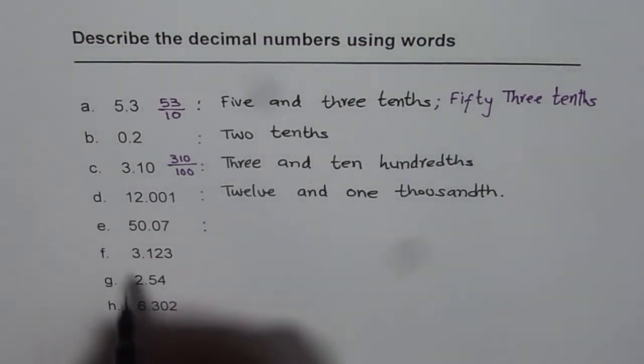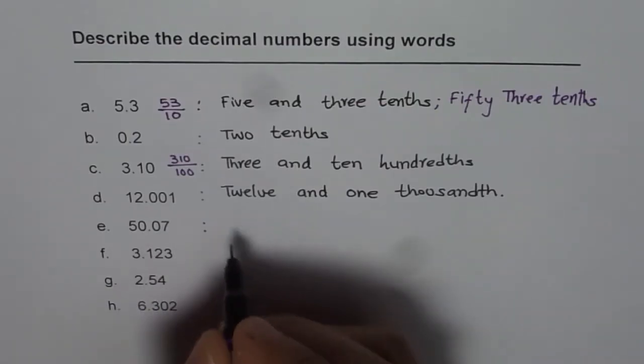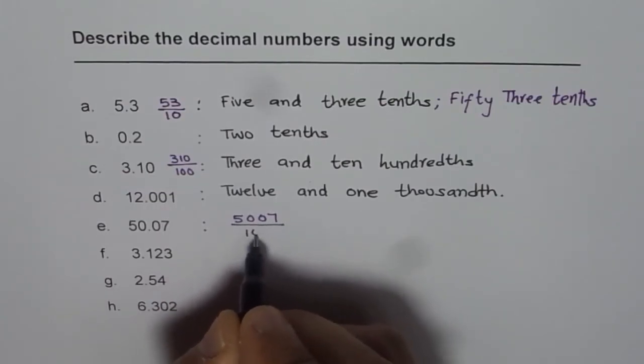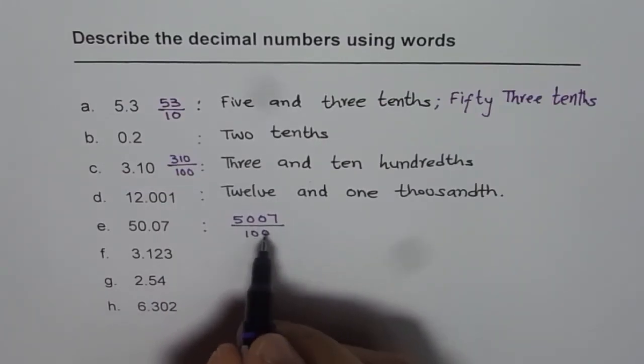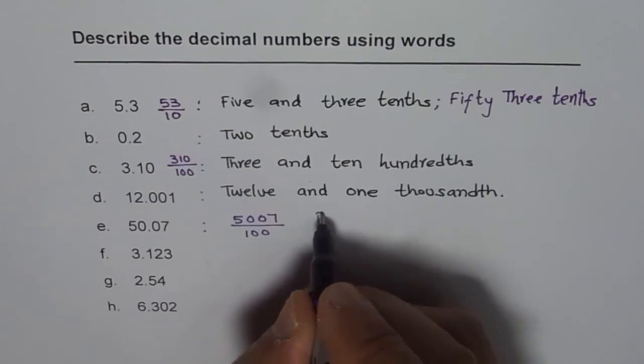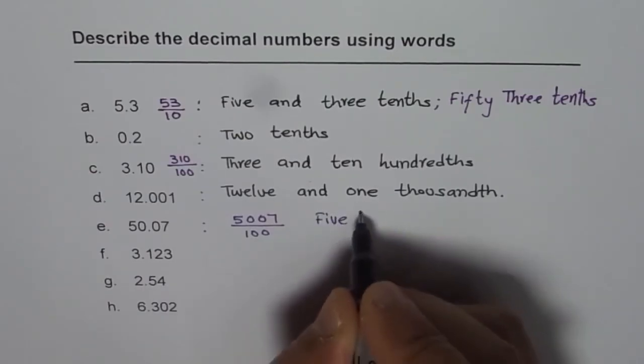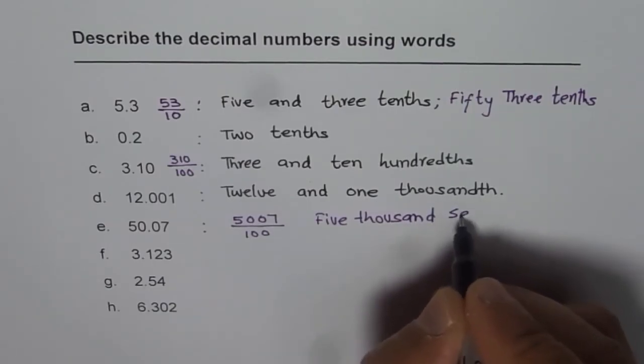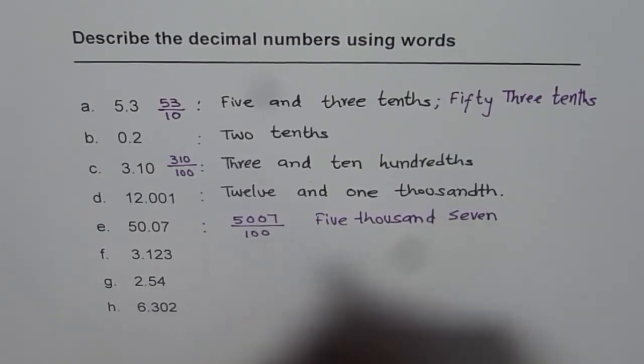Let me write this one: 50 and 7 hundredths. Think about it like 5007 over 100. So you can describe this as 5,007 hundredths.